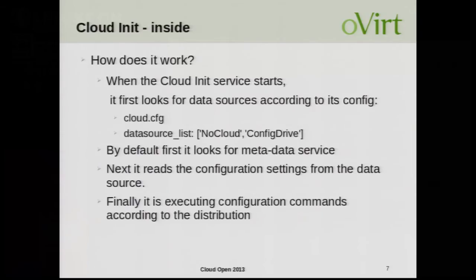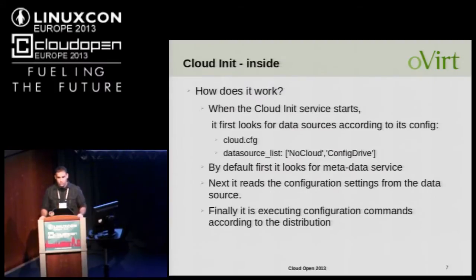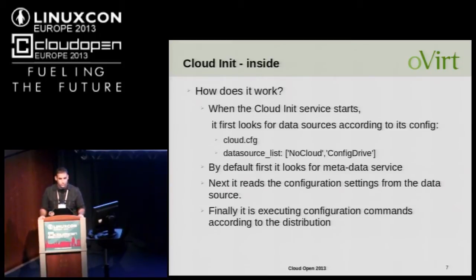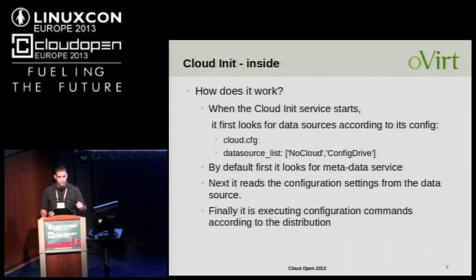How does it work inside? Cloud-init is a service that starts when the VM boots. It first looks in its cloud config file for what data sources it should read. There is a sample list — as an example, here is how oVirt uses it with NoCloud and config drive. By default it looks for the EC2 metadata service user data. There is a per-distribution implementation of some commands because different distributions handle things differently — for example, setting hostname in Ubuntu versus Fedora uses different file locations.